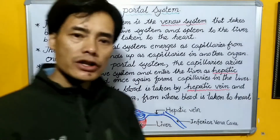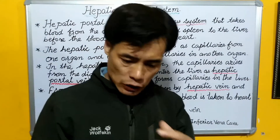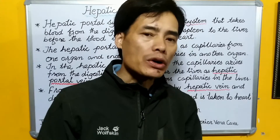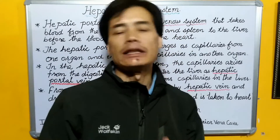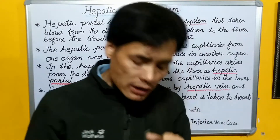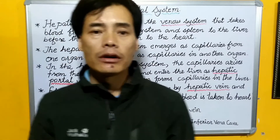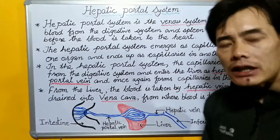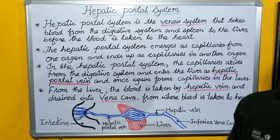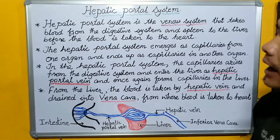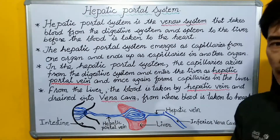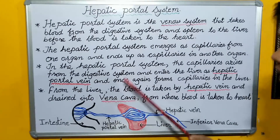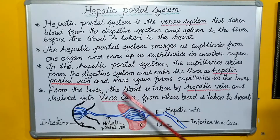So this was the explanation for the hepatic portal system. Now I would like to tell you the significance. The significance of the hepatic portal system is that when the blood is carried from the digestive system to the liver, a number of substances have to be absorbed by the liver.